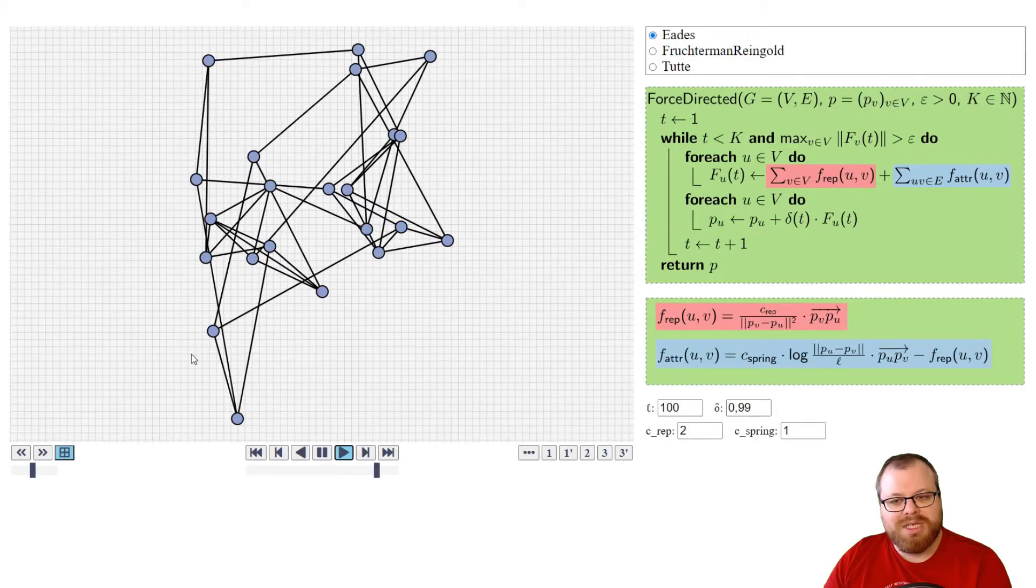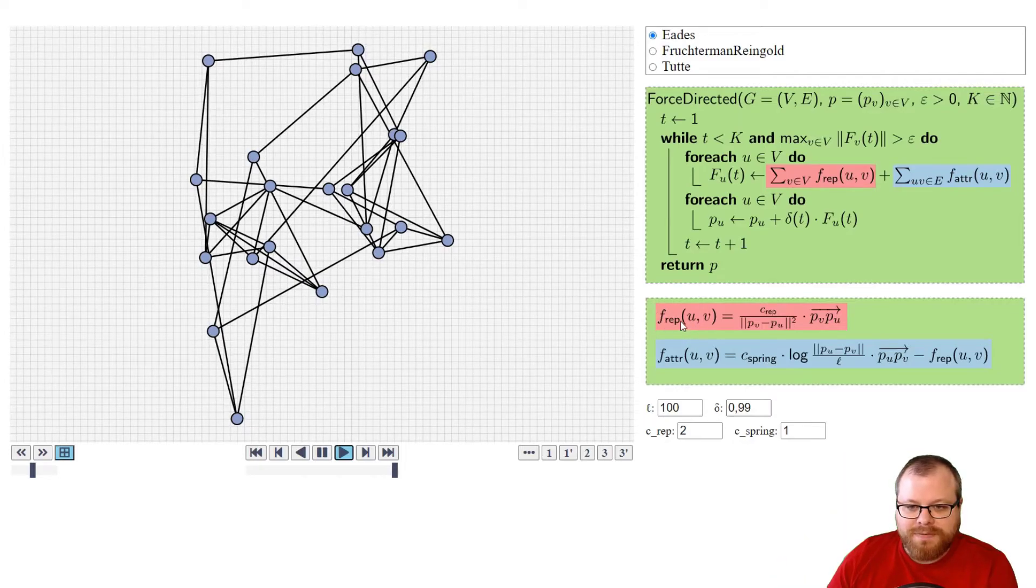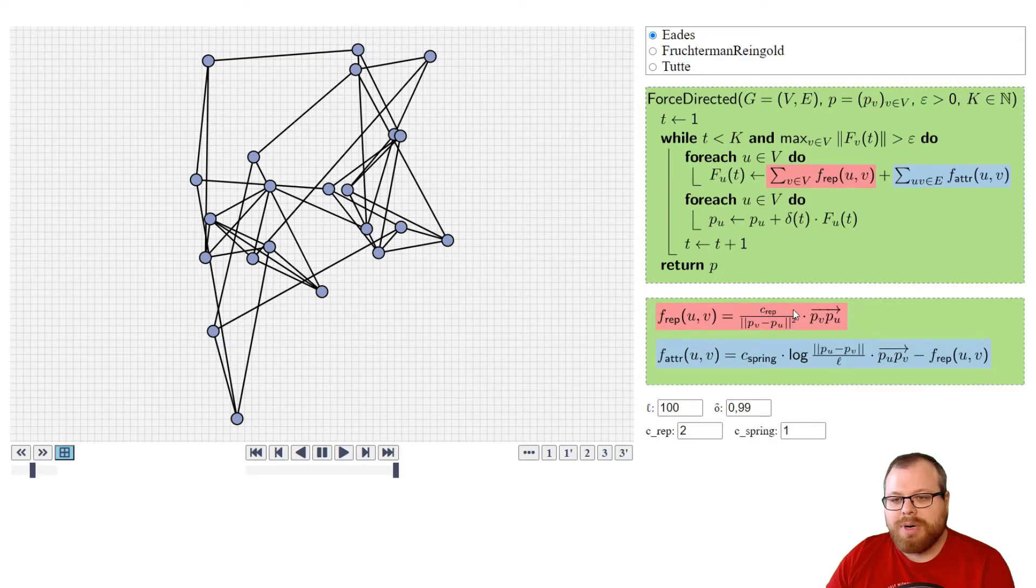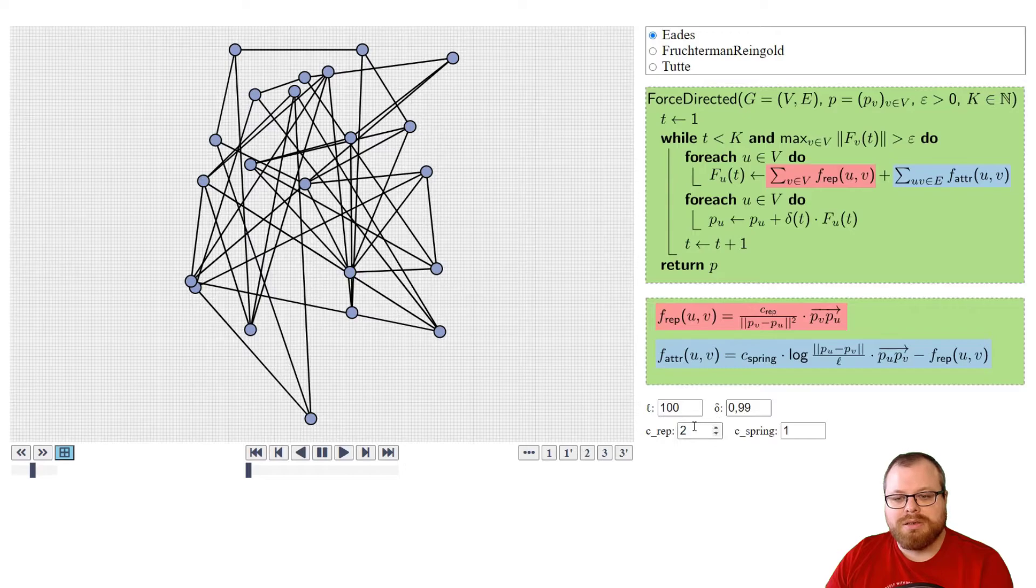The problem here is, in the repulsive forces, we don't have this L. The repulsive forces are quite small compared to this. So if we change this L from a 1, then we also should change these parameters, these constants, to get something good. And depending on how we choose them, let's say I make this very large here, we can get better drawings.